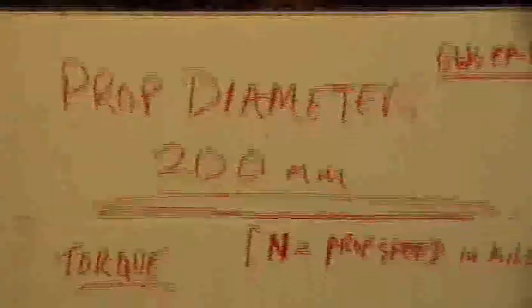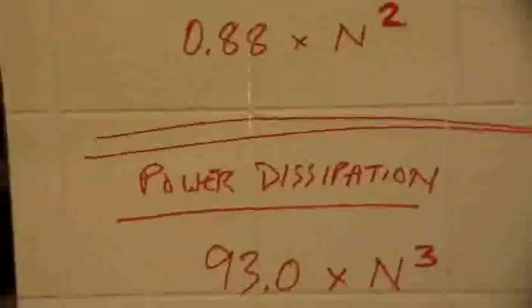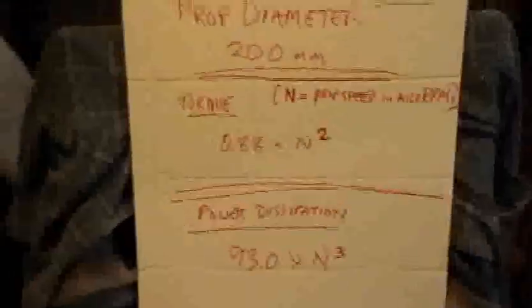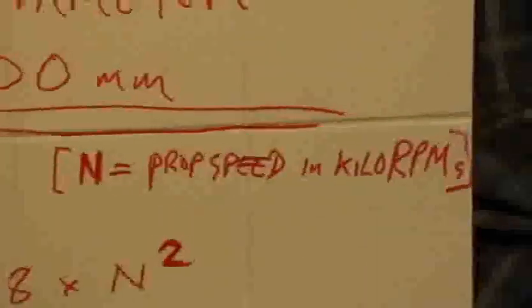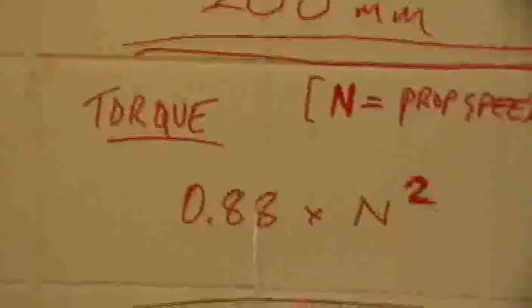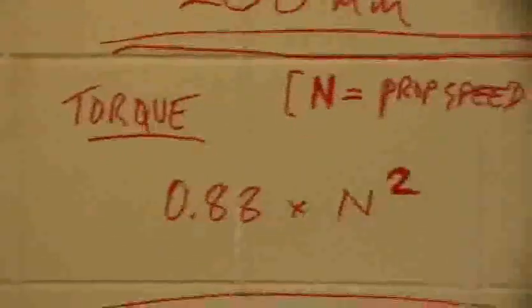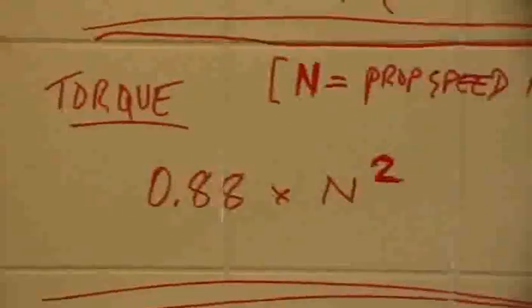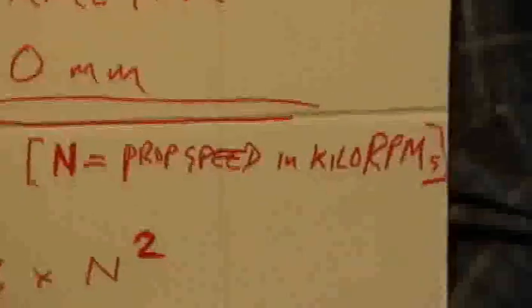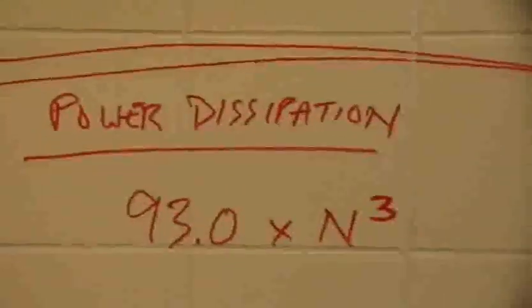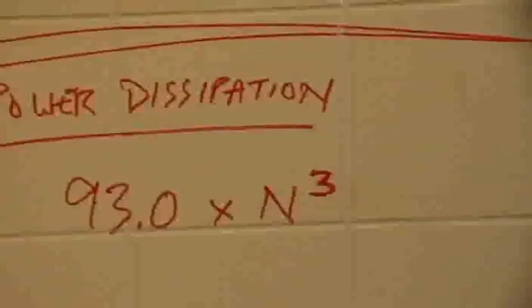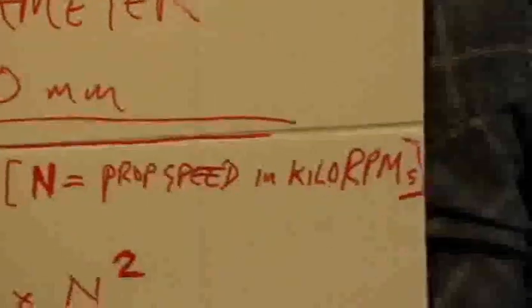Today I'm going to be referring to formulas for the GWS EP 8040 model airplane propeller to determine the torque and power dissipation of an orbit motor turning at a given RPM. In these formulas, n means prop speed in kilo-RPMs. Torque is given by 0.88 times n squared, and power dissipation is 93.0 times n cubed, where n is prop speed in kilo-RPMs.